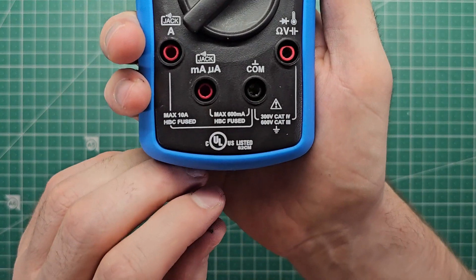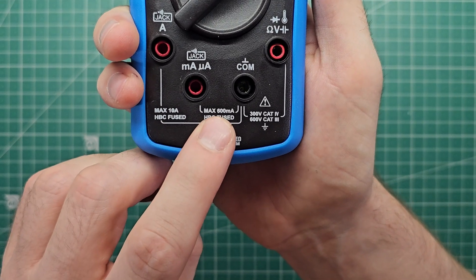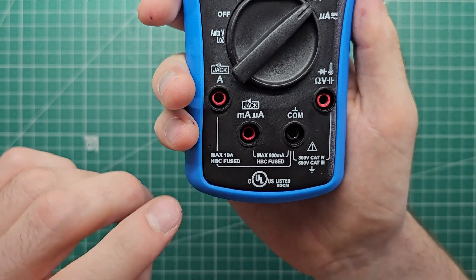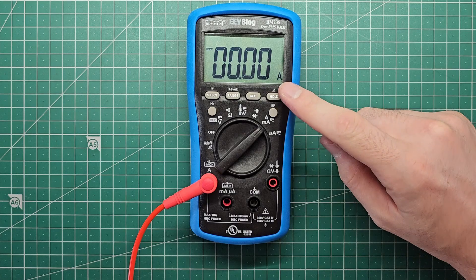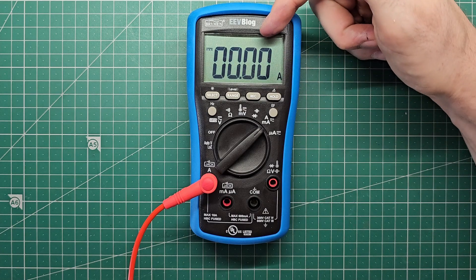So if you put a high current measurement into the milliamp port, you'll probably pop the fuse, but if you put a low current into the amp port, that's okay, but you just won't get a very precise measurement.